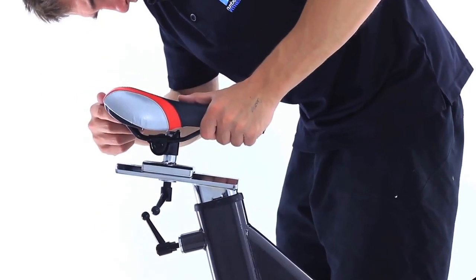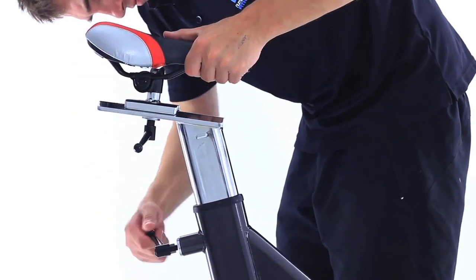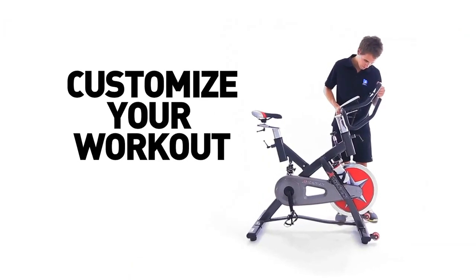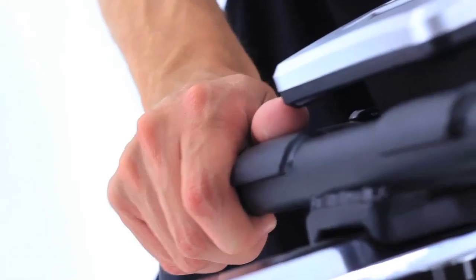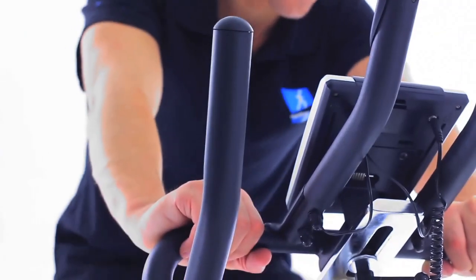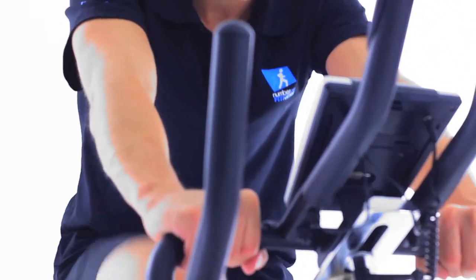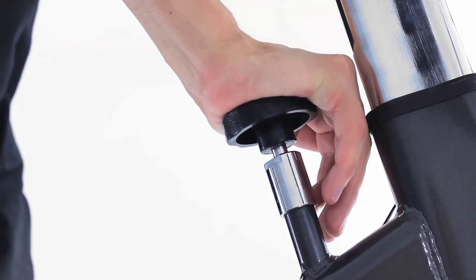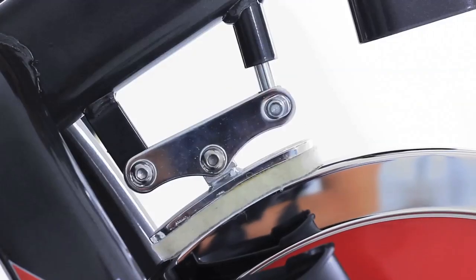Customize your workout with an adjustable seat. The handlebars are also adjustable to help you find the perfect fit. The easy quick-brake system stops you in your tracks when you're finished riding.